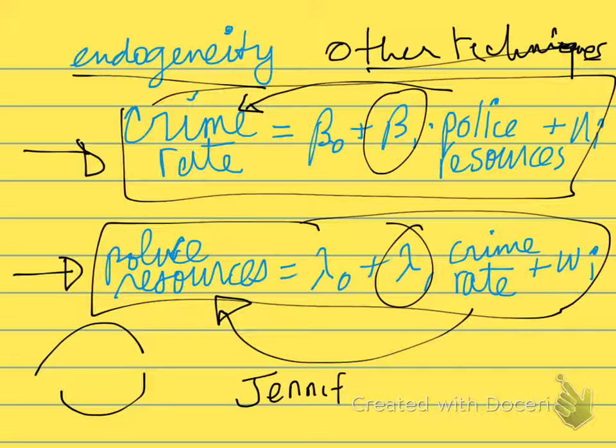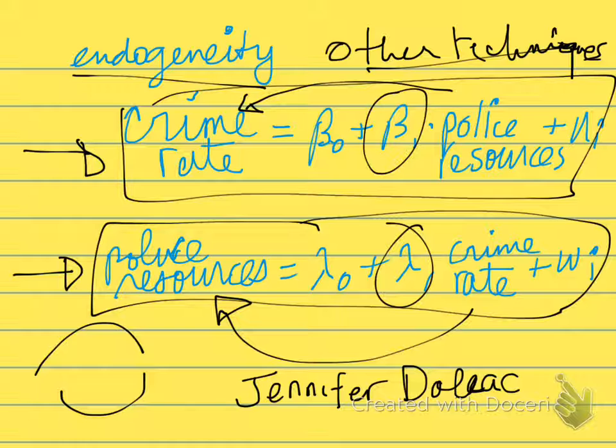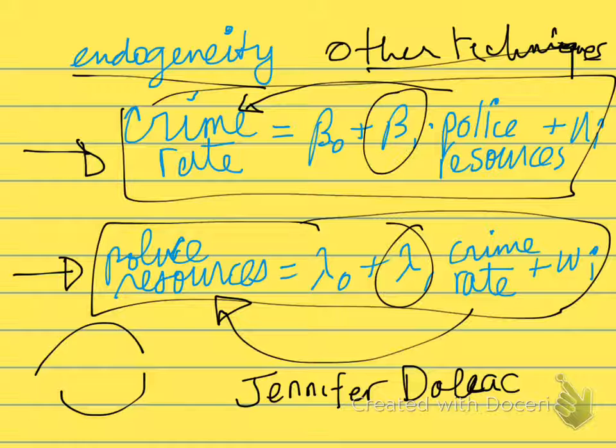If you're interested in this particular kind of endogeneity, then Professor Jennifer Doliak is the person to follow. She has a podcast blog where she podcasts about papers in crime, the economics of crime, that tries to address this endogeneity. It's well worth taking a look at.